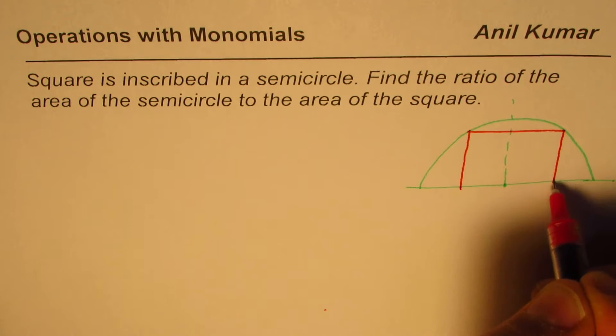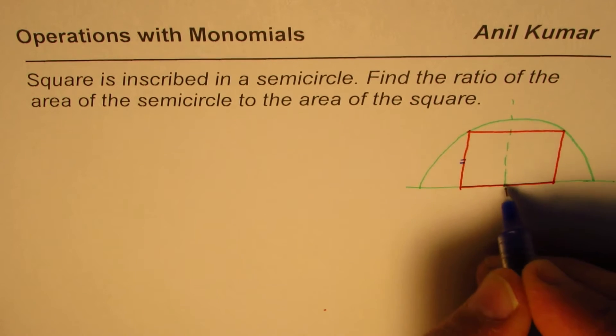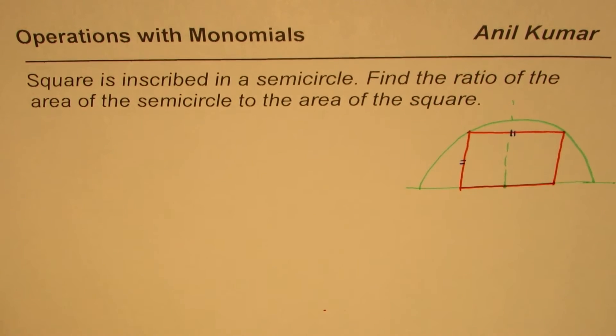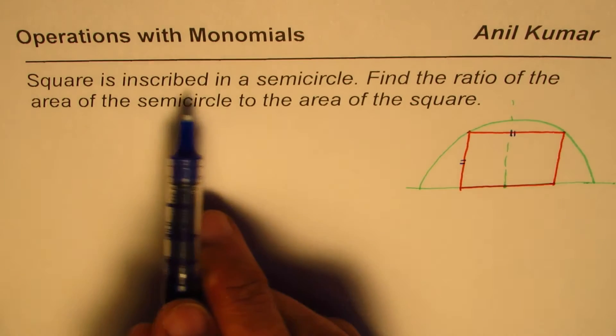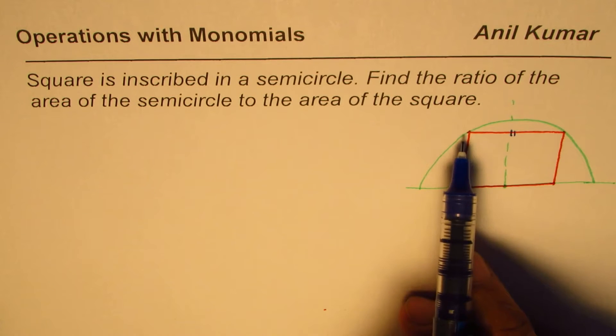It probably looks more or less like a square, but assume that all the sides are equal as they should be for a square. So what I'm trying to say here is that this side is equal to this side, right? So these two sides are equal. The square is inscribed within, with all the vertices touching points on the semicircle.